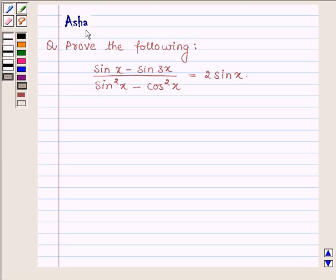Hi and welcome to the session. I am Asha and I am going to help you with the following question which says prove the following: sin x minus sin 3x upon sin square x minus cos square x is equal to 2 sin x.